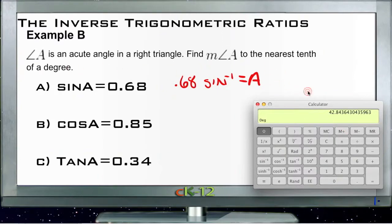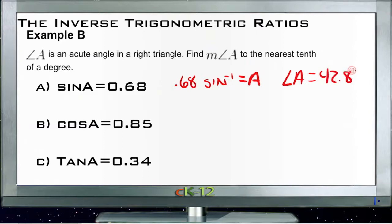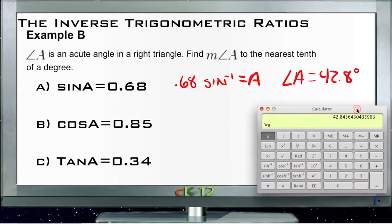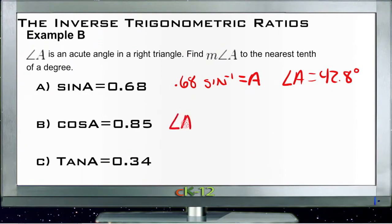Let's take our calculator and do 0.68, then inverse sine gives us 42.8 degrees, so angle A equals 42.8 degrees. Now for our second one, we have cosine of A is 0.85, so we need to find the inverse cosine of 0.85. That gives us 31.78, which rounds to 31.8, so angle A is 31.8 degrees.